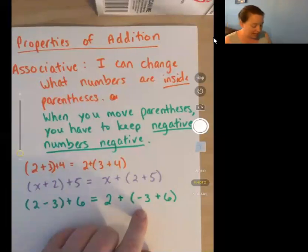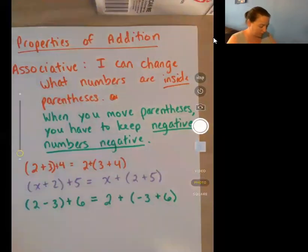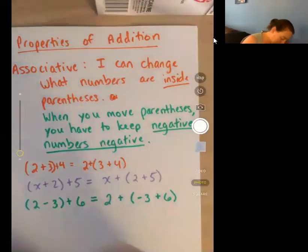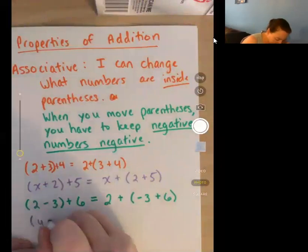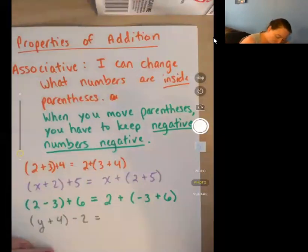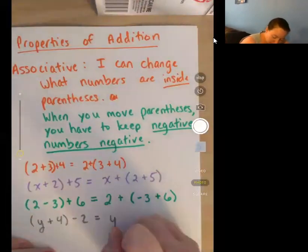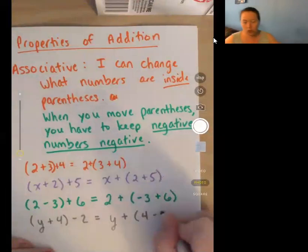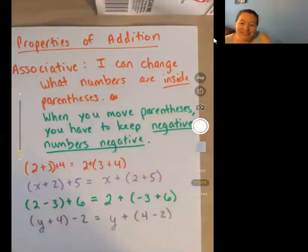Same as if I start out with y+4-2, it becomes y+(4-2). The negative sign stays with the two. The two doesn't suddenly lose its negative sign. So that's switching up the associative property for use with negative numbers.